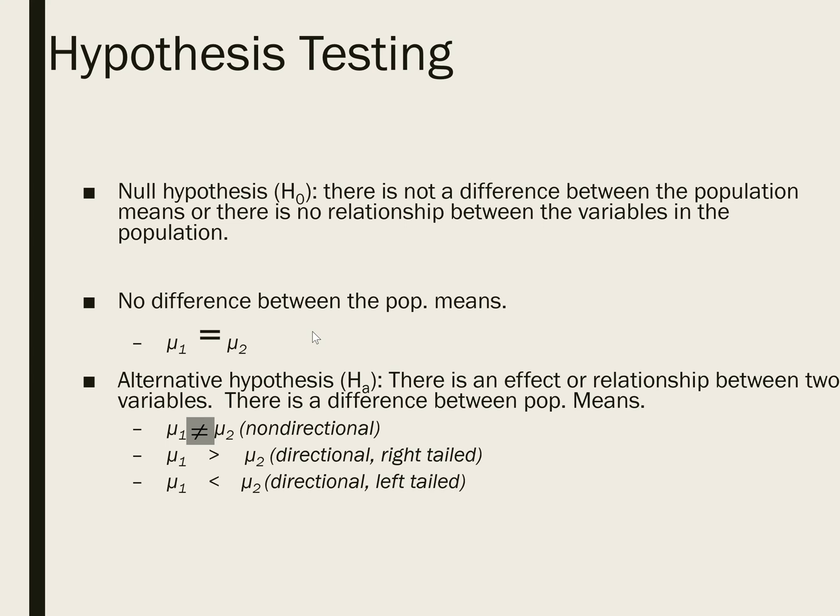An alternative hypothesis can be non-directional, meaning it would just say something like there is a difference, or there is expected to be a difference, but it won't state the direction of the difference. Or it could be directional, where the direction of the difference would be stated, such as population one is expected to be greater than population two, or population one is expected to be less than population two.